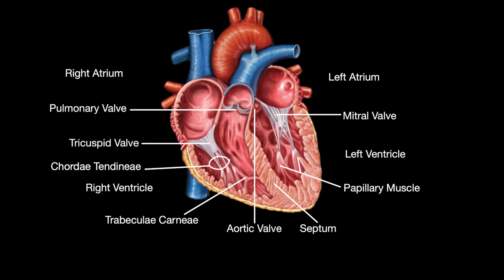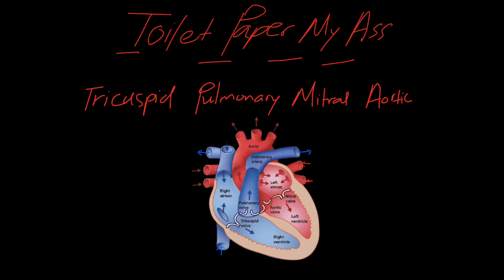Here is a final cleaned-up look at blood flow. A funny mnemonic to help remember blood flow through the valves is 'toilet paper my ass.' The T from toilet stands for tricuspid, the P from paper is pulmonary, the M from my stands for mitral, and the A from ass stands for aortic. To conclude blood flow, the circulation between the heart and lungs is called pulmonary circulation, and the circulation between the heart and the rest of the body is called systemic circulation.